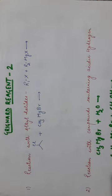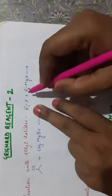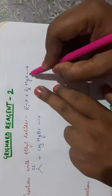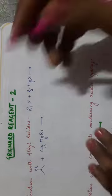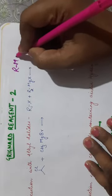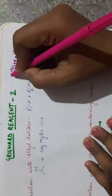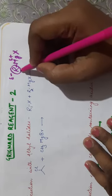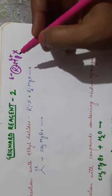Reaction with alkyl halides. R1X is an alkyl halide where R1 can be an alkyl or aryl group. R2MgX is the Grignard reagent — alkyl or aryl magnesium halides. The R part is partially negative and magnesium is partially positive, so it acts as a carbanion and will act as a nucleophile as well as a base.